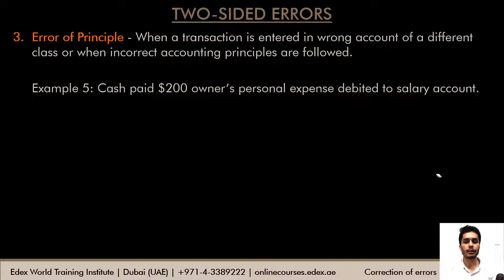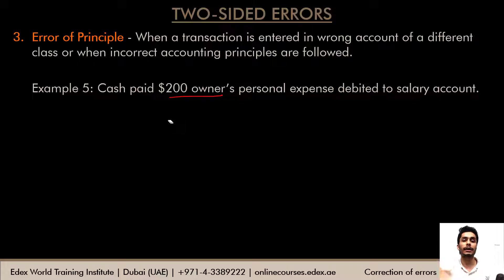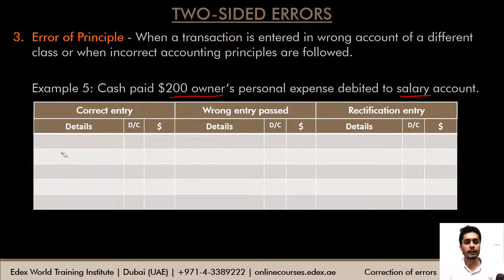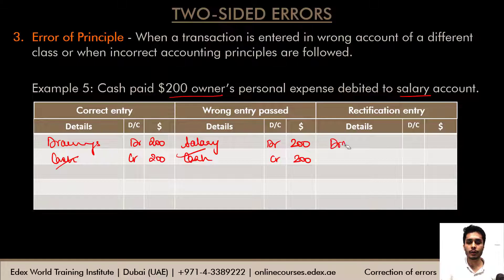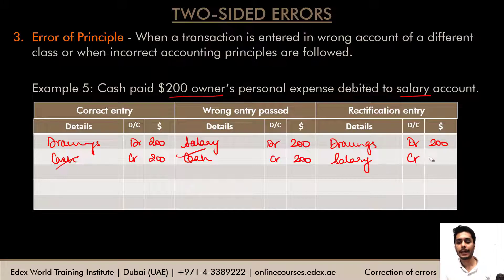Another example of error of principle: cash paid $200 as owner's personal expenses was debited to salary account. As per the accounting entity principle, personal expenses should go to the drawings account. Correct entry: drawings debit $200, cash credit $200. Wrong entry: salary debit $200, cash credit $200. Cash is correct; the rectification entry is: drawings debit $200, salary credit $200.